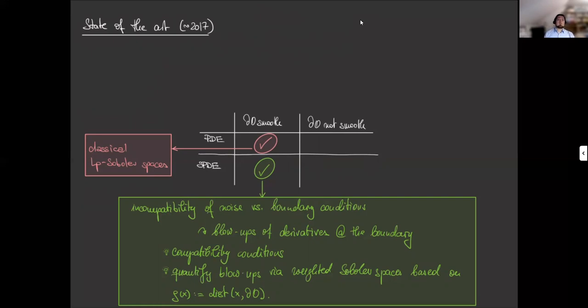What happens is that you have a very rough noise. At the same time, you impose, for example, zero Dirichlet boundary condition, and this leads to the fact that at the boundary, your solution is very steep, so that the higher order derivatives will have blow-ups at the boundary.